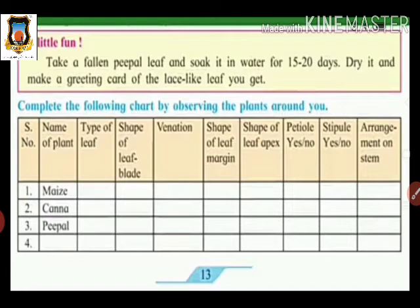They also provide a chart to complete by observing plants around you — such as maize, canna, and peepal. You should observe and record the types of leaves, shape of leaflets, type of venation (reticulate or parallel), shape of leaf margin, shape of leaf apex, presence or absence of petioles, presence or absence of stipules, and the arrangement of leaves on the stem.